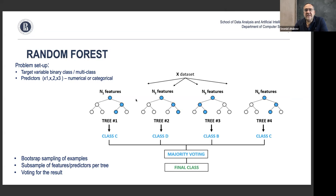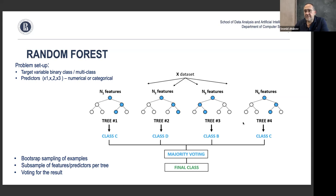In random forest, you set up multiple trees. Each tree is trained on its own overlapping subset of data and on a subset of features, producing different trees. When classifying a new element, you send it through each tree, and each tree gives an answer — for example, class C, class D, class B, class C.